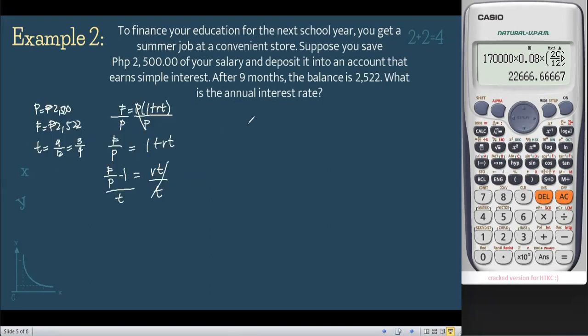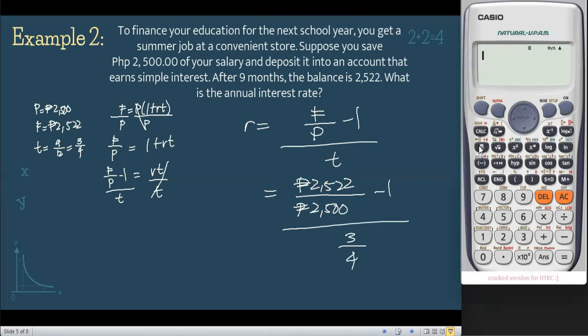The formula we need to use is R equals (F over P minus 1) all over T. Substitute all the givens: 2,522 all over 2,500 minus 1, all over the time, 3 over 4. Using our calculator, that gives us 2,522 over 2,500 minus 1, all over the quantity 3/4, which equals 0.01173, or simply in terms of percent, 1.173%. This is our final answer.